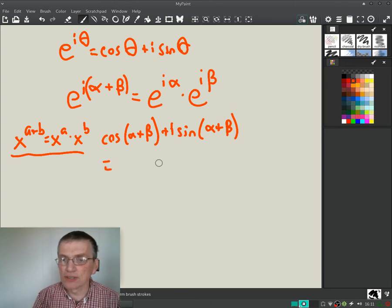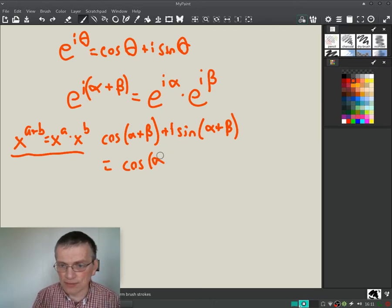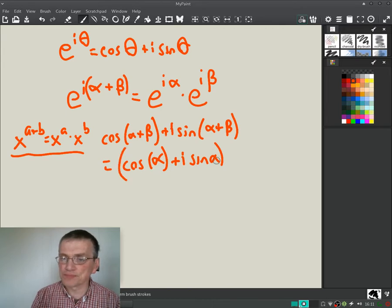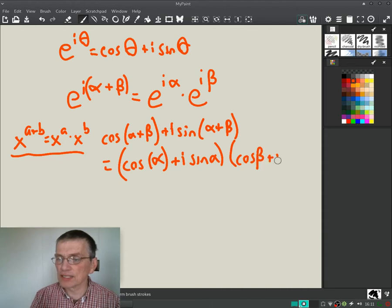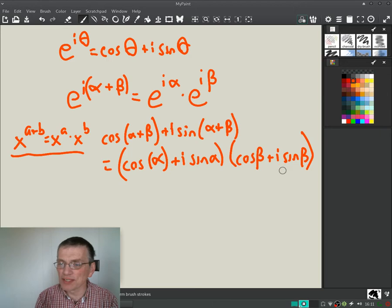Equals cosine alpha plus i sine alpha times cosine beta plus i sine beta. All right, we're just using our regular algebra rules. We replace this with cosine plus i sine, this cosine plus i sine, and we have this. Now we do have to multiply this out.